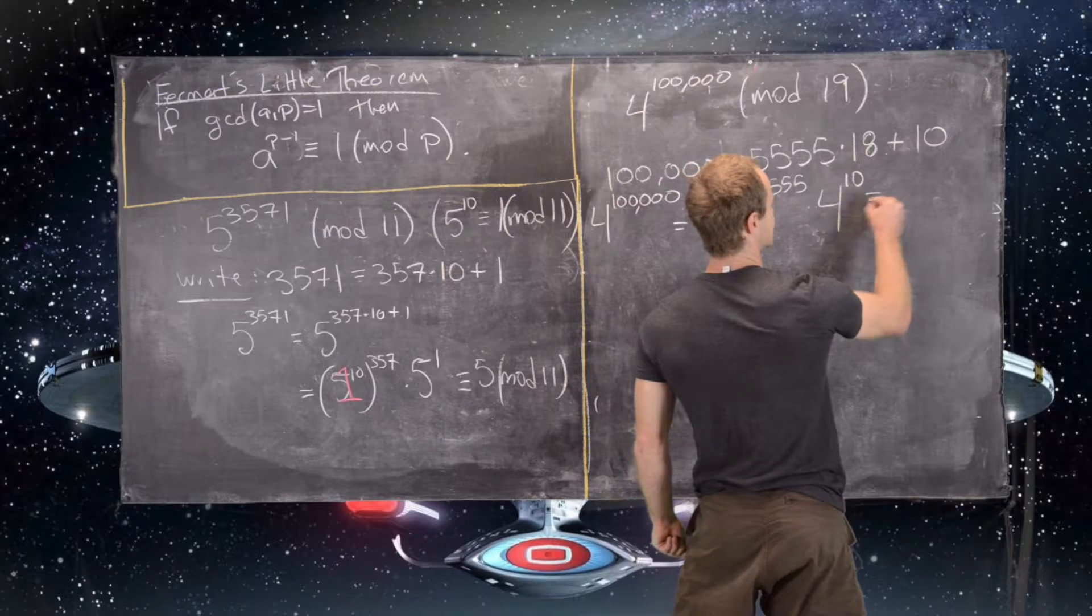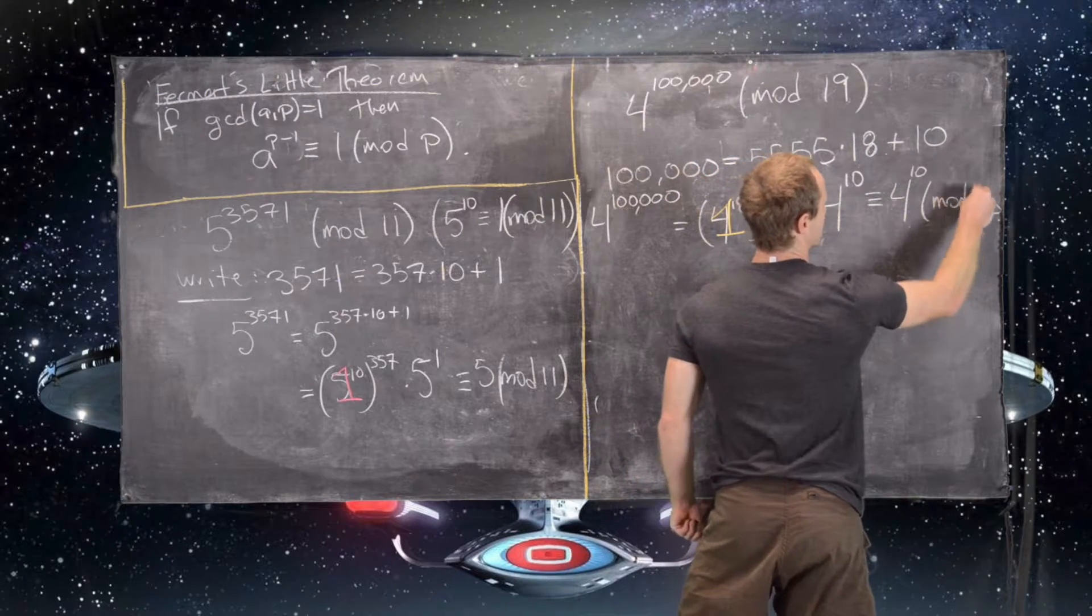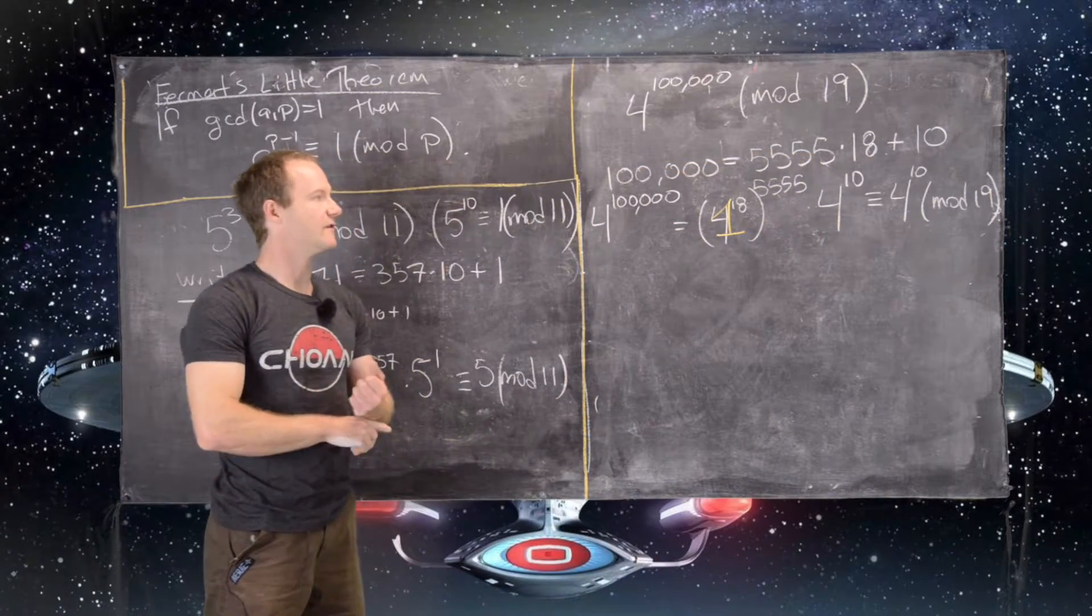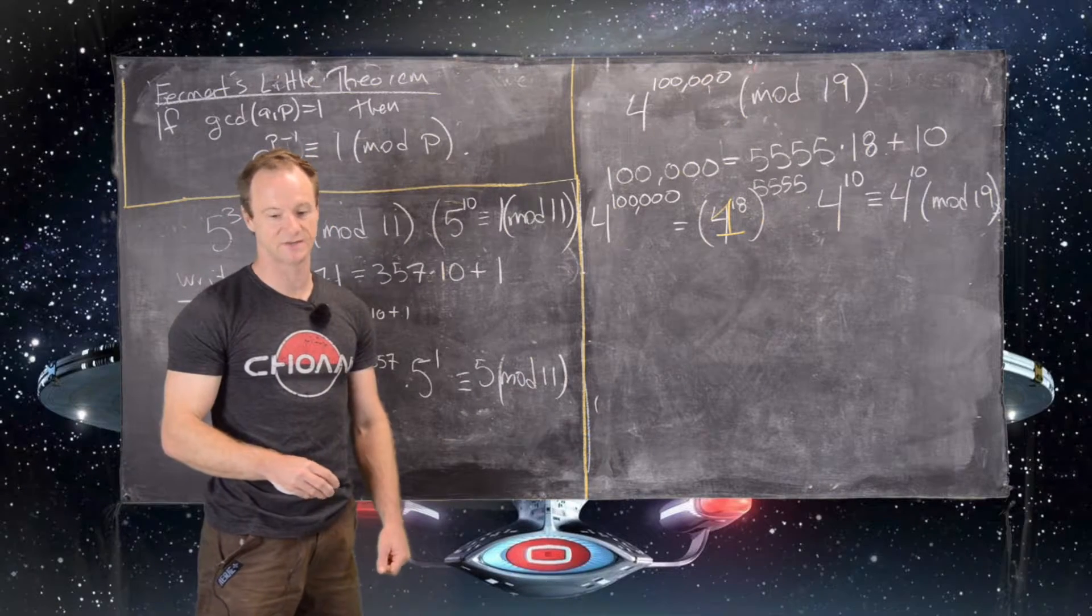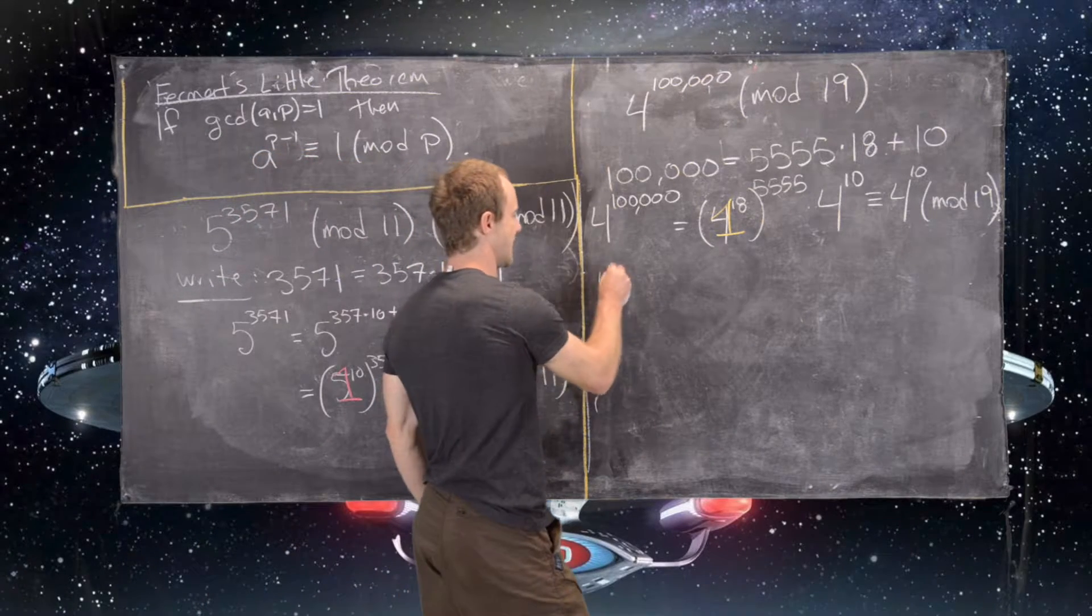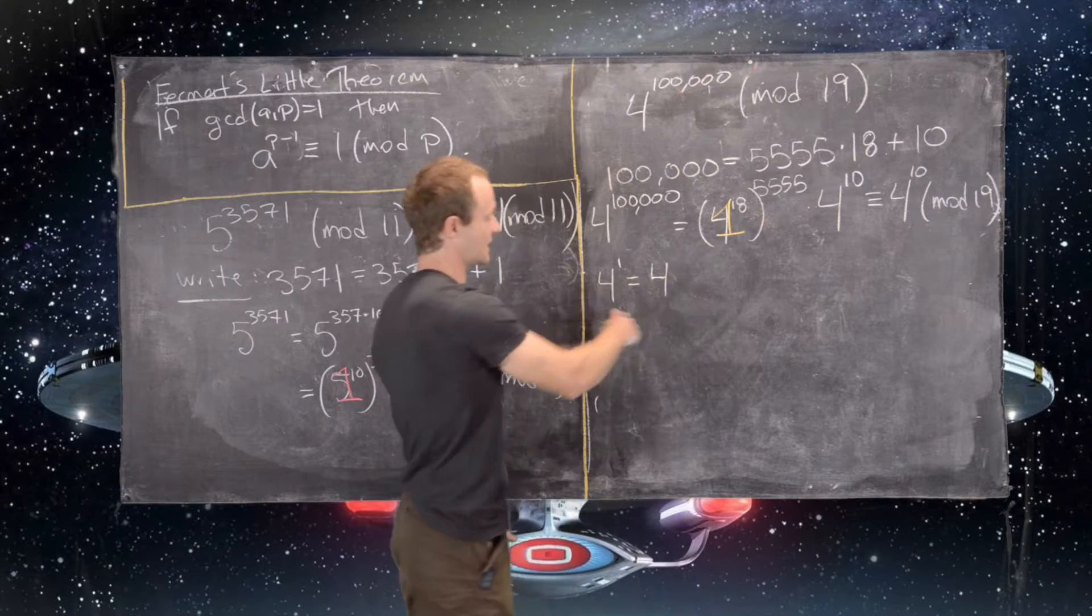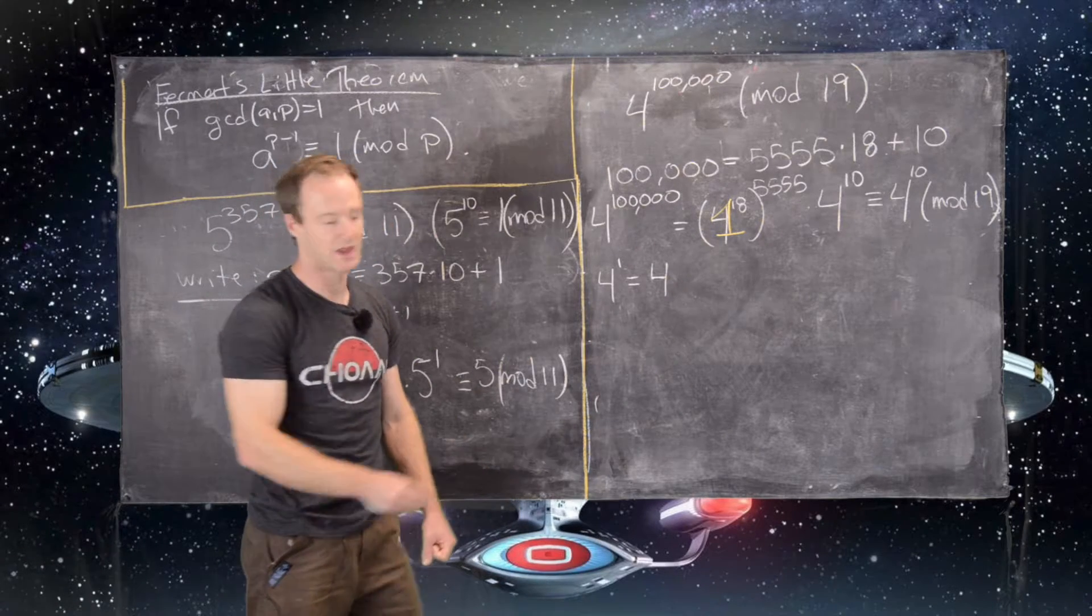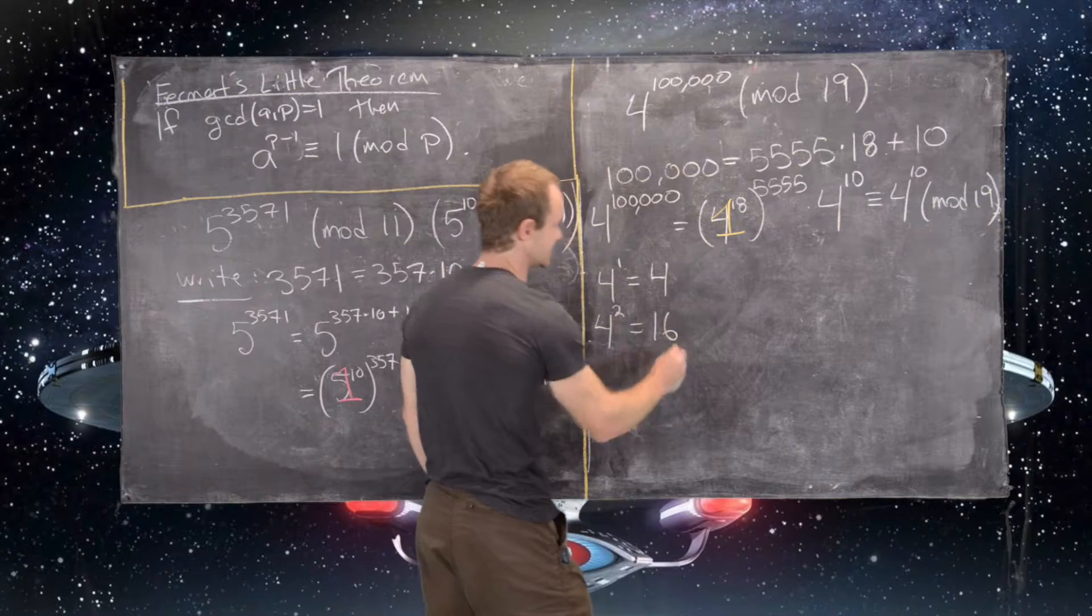So that tells us that this is congruent to 4 to the 10th power modulo 19. And so now we want to simplify 4 to the 10th power, and we'll do that by the method of successive squaring. So we'll notice that 4 to the 1st power is equal to 4. And I'll do all calculations over here mod 19, although I won't keep writing mod 19. And then we have 4 squared is equal to 16.